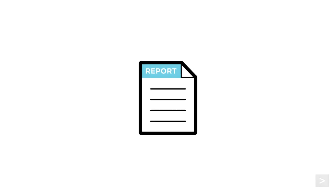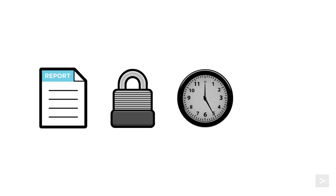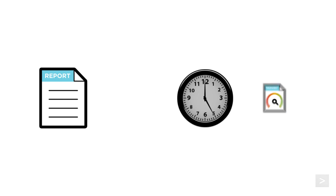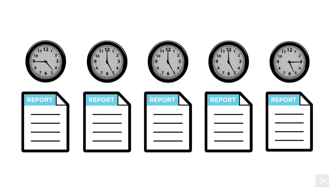Reports in Splunk are saved searches we want to run again. When we save a search as a report, we have the ability to manage its permissions, have it run on a schedule, or accelerate it. If we start accelerating or scheduling many reports to run at or near the same time, how can we determine which search or report will take precedence?